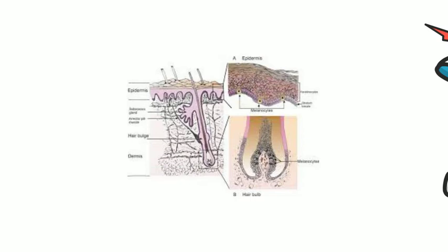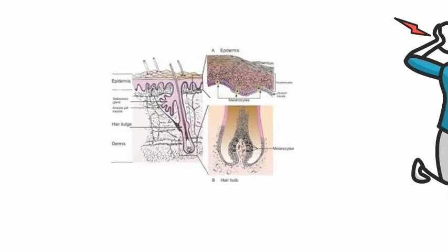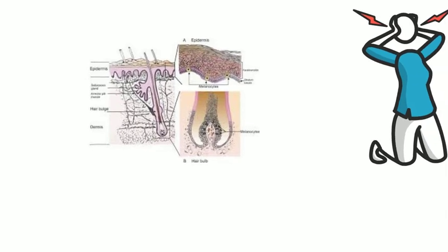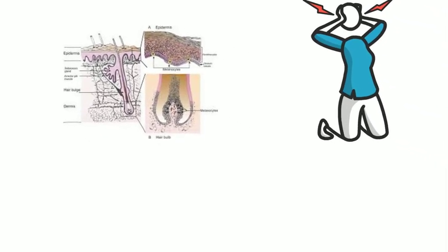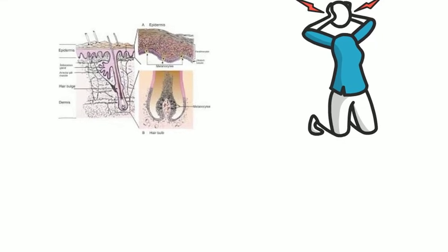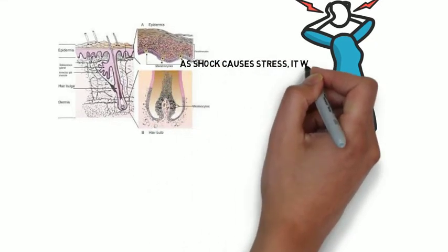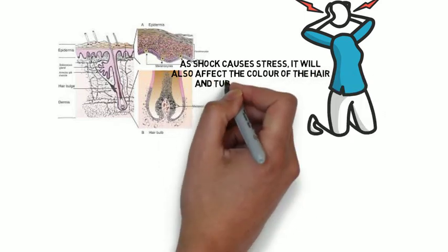If the production of melanin is reduced, the hair changes its color to gray, while if the production of melanin ceases altogether, the hair becomes white, no color. Stress is one of the reasons why the production of melanin reduces. As shock causes stress, it will also affect the color of the hair and turn it gray or white.